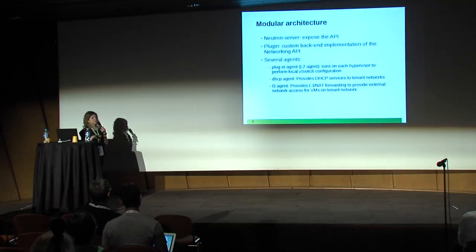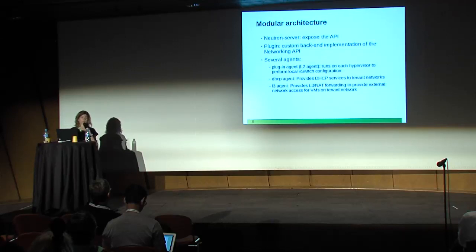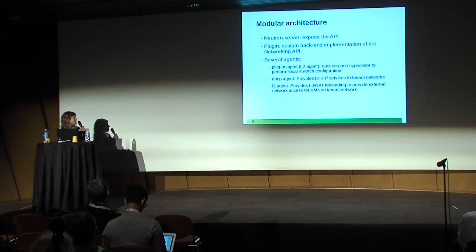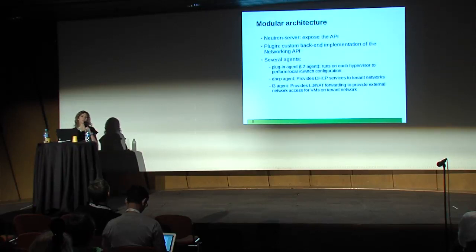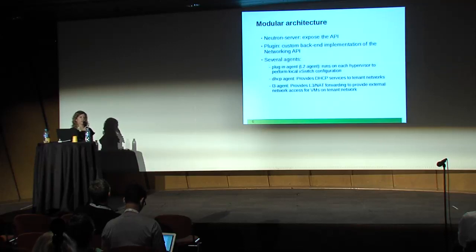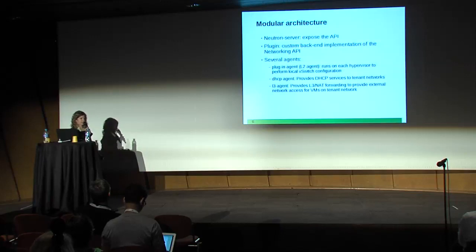Neutron's architecture is modular, composed of several pieces — and maybe that's one of the reasons why it's so challenging, but also very interesting. The components include the Neutron server, which exposes the API, and a plugin. Neutron uses plugins to allow more flexibility — you can pick your networking backend and the plugin accordingly.